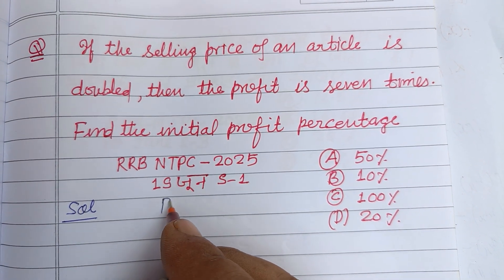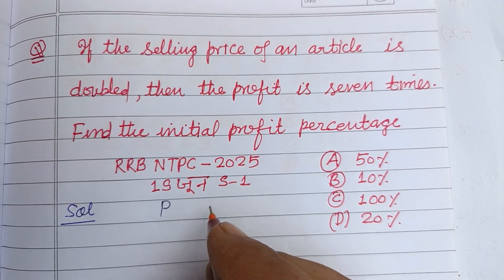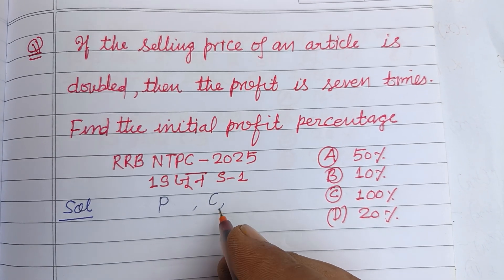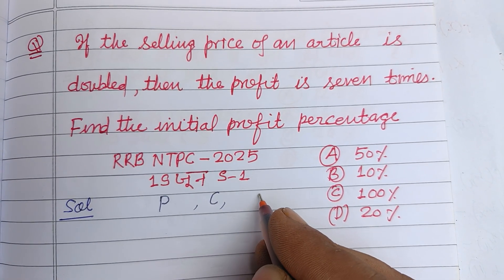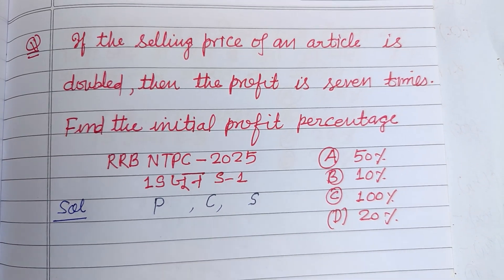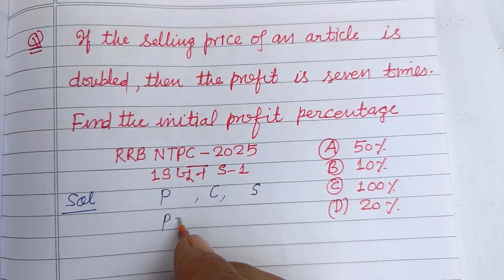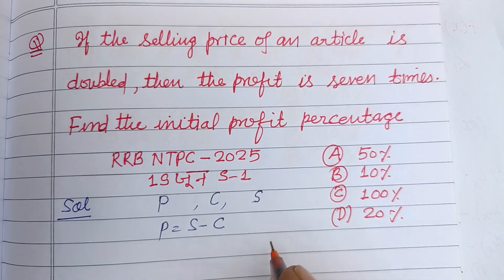Let profit be represented by p, cost price by c, and selling price by s. So we know that p = s − c.